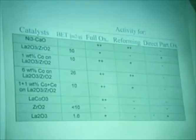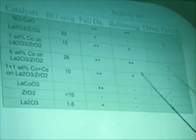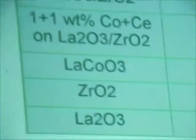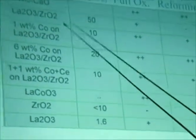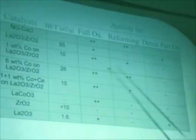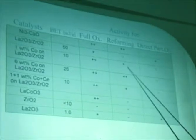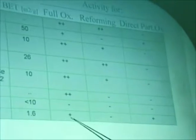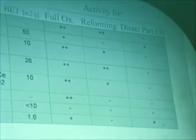In a summary table of more catalysts, nickel on calcium like Chaudry used gives full combustion followed by reforming. Lanthanum on zirconia gives full oxidation next to direct partial oxidation. Adding cobalt — a reducible oxide — on this support gives full oxidation and reforming, as the reduced cobalt in the end of the reactor gives reforming reactions. Adding more cobalt and cerium gives a little more full oxidation. Lanthanum cobaltate is only a full oxidation catalyst. Zirconia alone has almost no activity, and lanthanum itself is a full oxidation and direct partial oxidation catalyst.